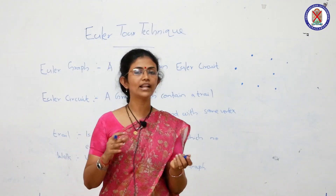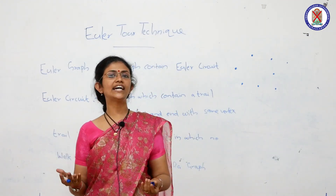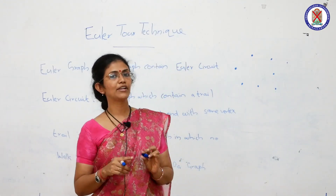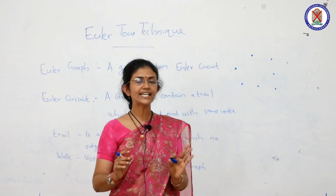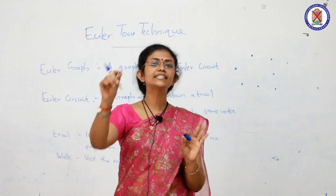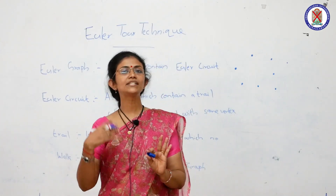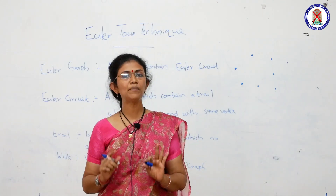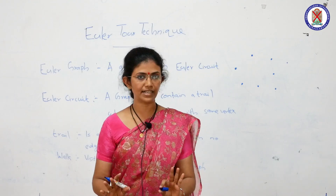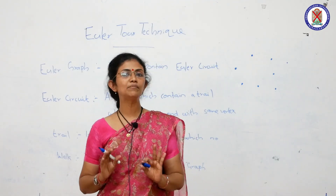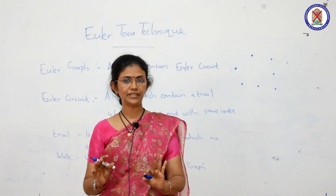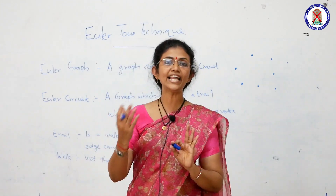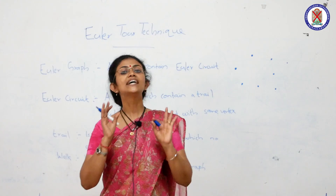What is an Euler graph trail? A trail is a walk where we visit edges. In an Euler trail, we traverse all edges of the graph. There is a trail, and there is a circuit within the graph.